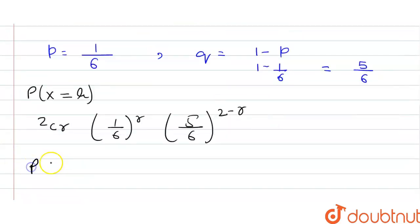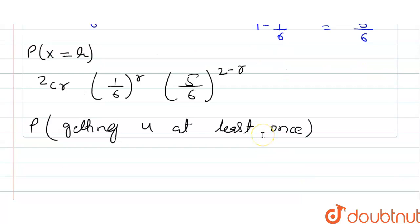Now, probability p of getting 4 at least once. You have to find it. That will be p x greater than equal to 1.